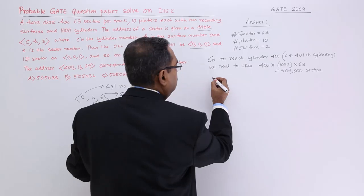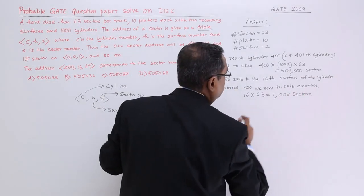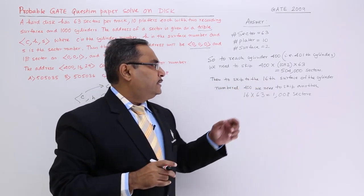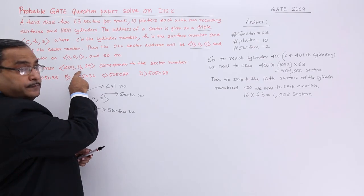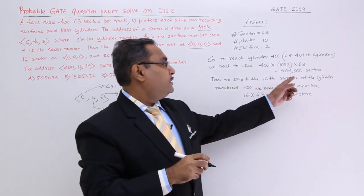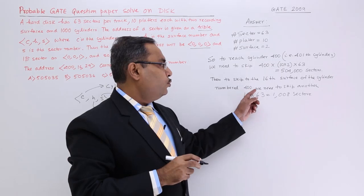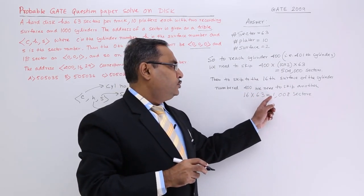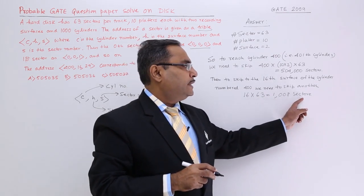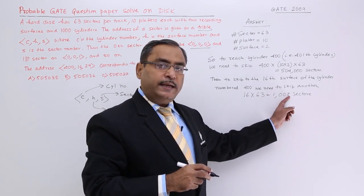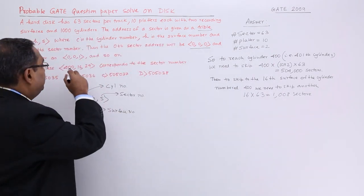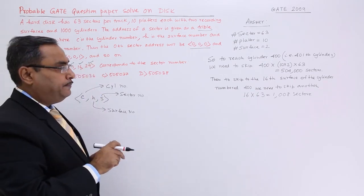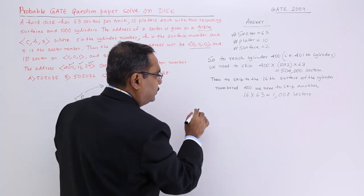Then, to skip to the 16th surface of cylinder 400, we need to skip another 16 × 63 = 1008 sectors.